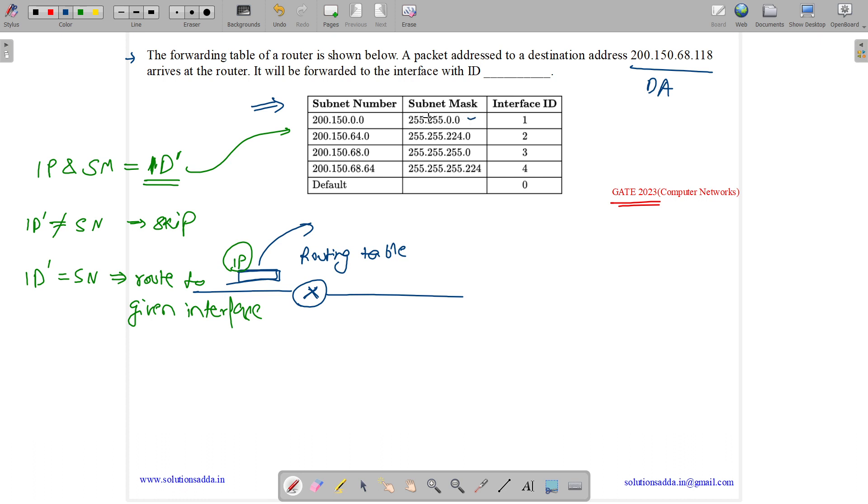If we are matching with two subnet numbers, let's suppose we AND with this subnet mask and this matches, and this one also matches, then in case of clashes, take maximum matching. I will show you what it means. So let us solve it.